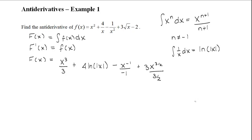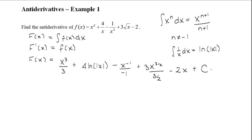For the last term, we have a constant. When you take the integral of a constant, you simply multiply it by x — so the formula is c times x. Here our constant is negative 2, so it's going to be minus 2x. The last step is remembering to add the integration constant, because when you take the antiderivative you're finding infinitely many solutions, and without initial values you can't find a particular solution. So we leave it as plus C.